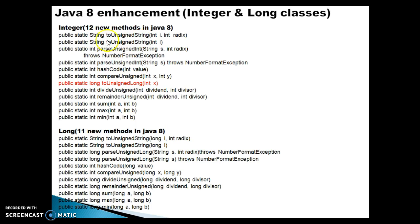The first method is a public static method that returns a String — it's called toUnsignedString. Let's talk about what signed and unsigned numbers are. A signed number refers to both positive and negative numbers, while an unsigned number refers to only positive numbers. That can be any data type like integer, long, or float. Most methods with the 'unsigned' word in their name are designed to handle unsigned, meaning positive, numbers.